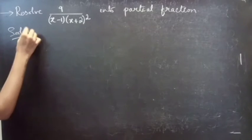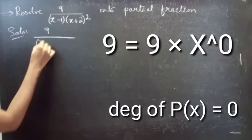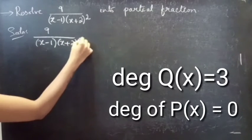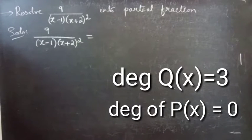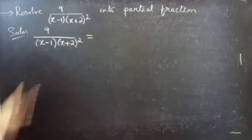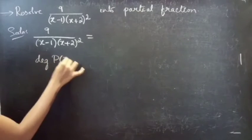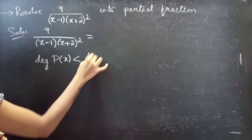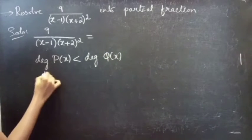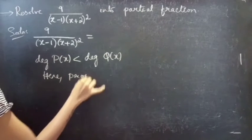Solution. We are given a fraction. In the numerator we are having a constant polynomial and in the denominator we are having a polynomial of degree 3. Obviously, the degree of P(x) is less than the degree of Q(x). So here the given fraction is a proper fraction.